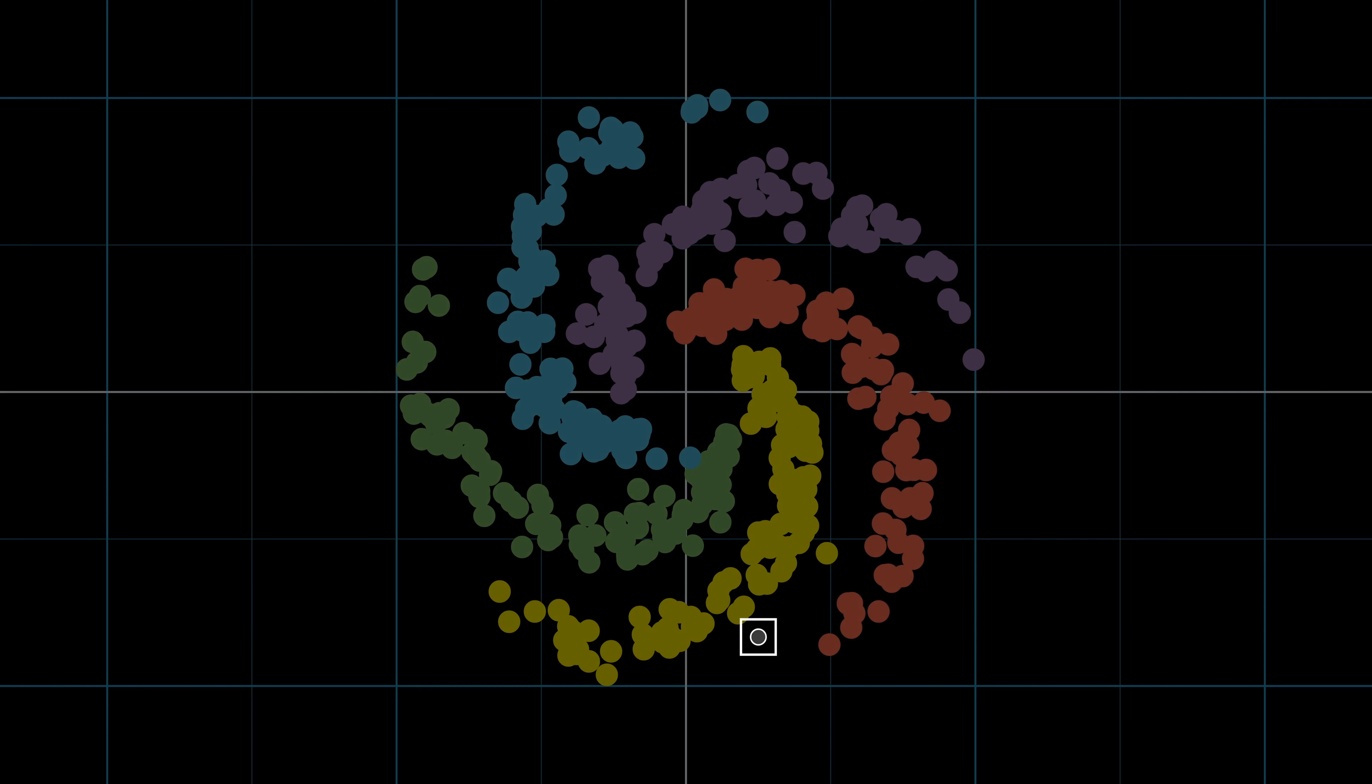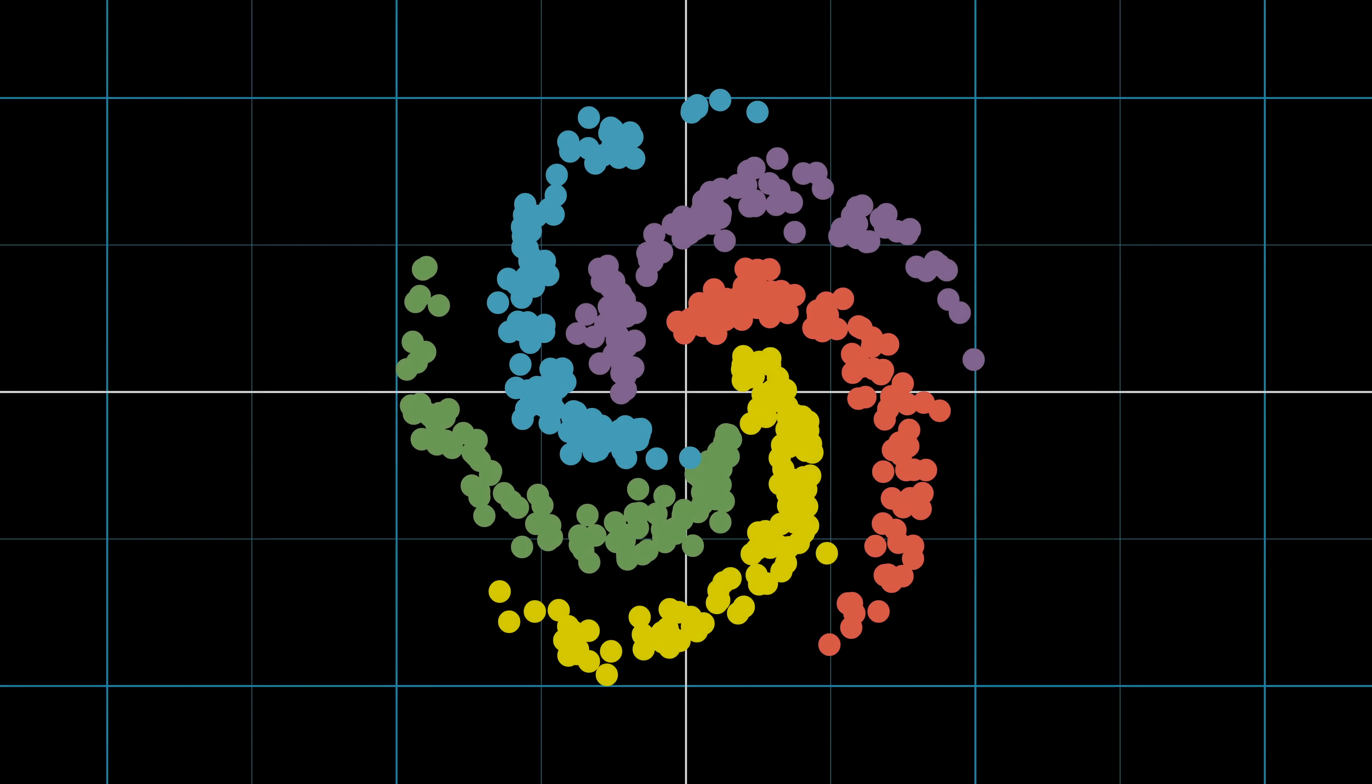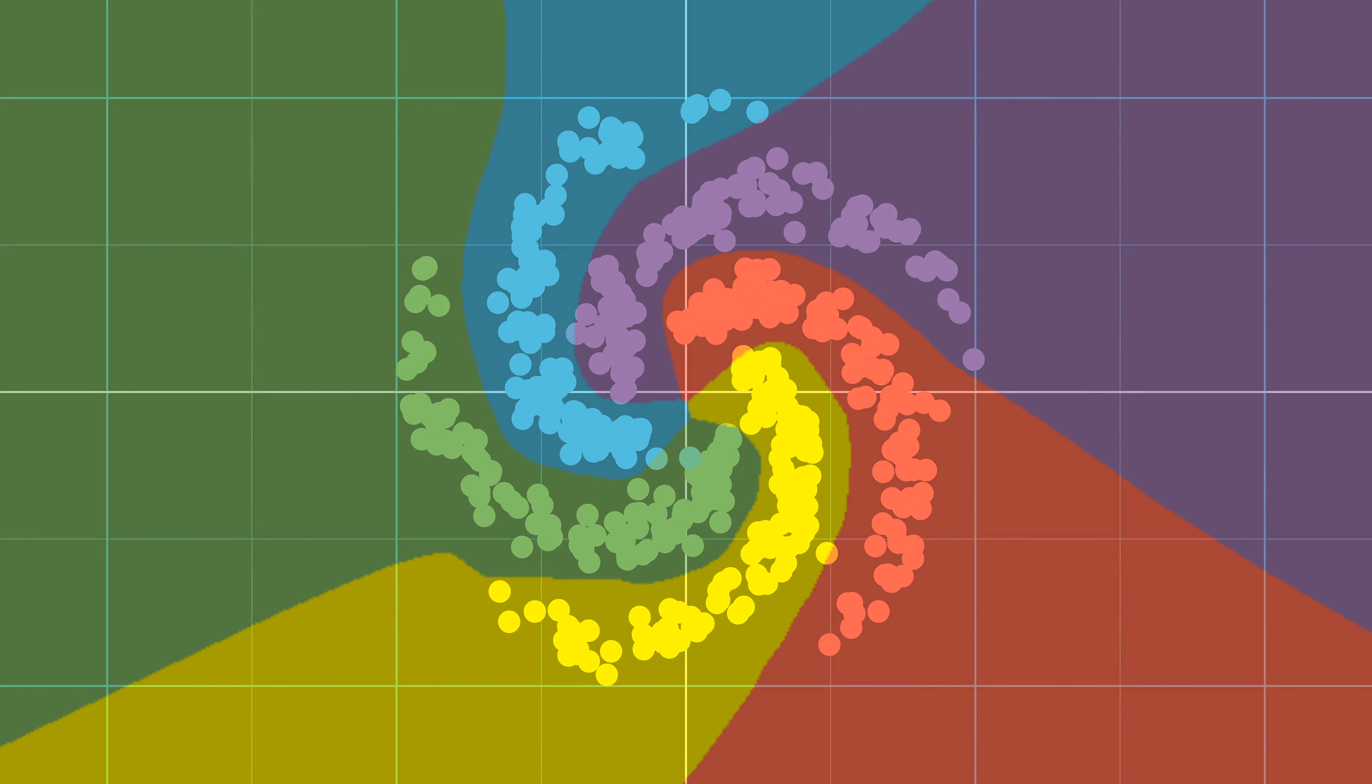For instance, when I pass this point through the neural network, it comes out as yellow, which is expected since it's close to the yellow spiral. So, if I do this for all points on the neural network, it divides the input space into 5 different spirals.